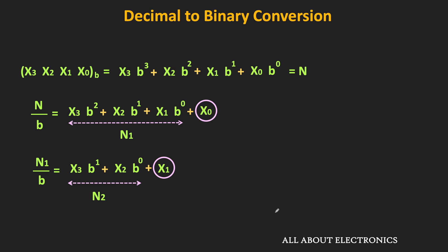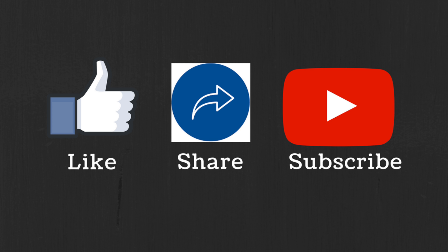In general, if we want to convert any decimal number into the equivalent number in a base-B number system, then by successively dividing by the factor of b, we can get this equivalent number. For example, to convert a decimal number into base-5, we successively divide by 5. I hope in this video you understood how to convert any decimal number into the binary equivalent. If you have any question or suggestion, let me know in the comment section below. If you liked this video, hit the like button and subscribe to the channel for more such videos.